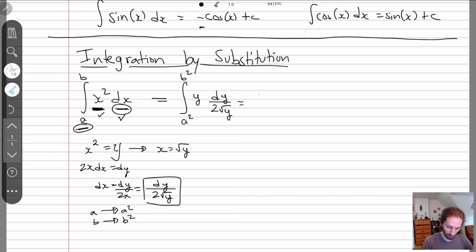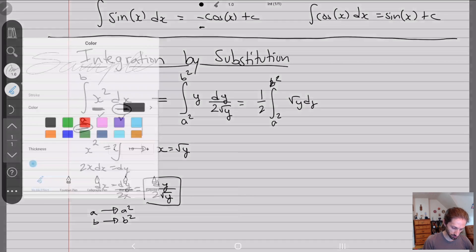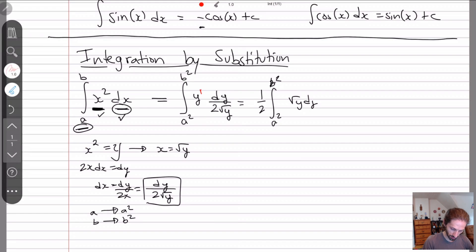And this is why I'm saying this is not always the best method, because you can kind of see here, we made it a little more complicated. So basically, what we have is 1 half integral from a squared to b squared, square root of y dy. Here, I just took these two, and they cancel. So I have a 1 here. This is y to the 1 half. 1 over 1 half is just 1 half for the exponents.